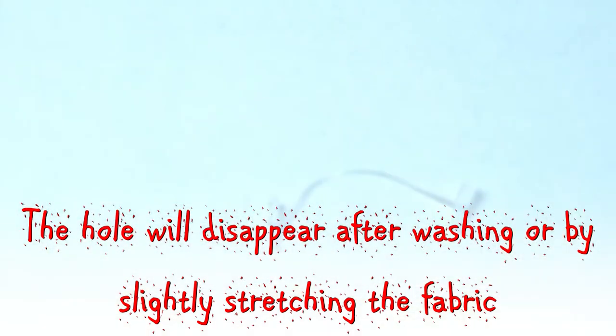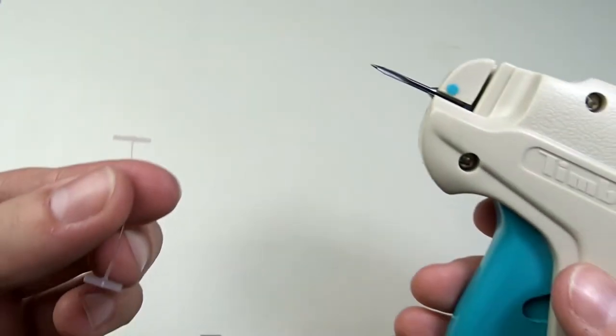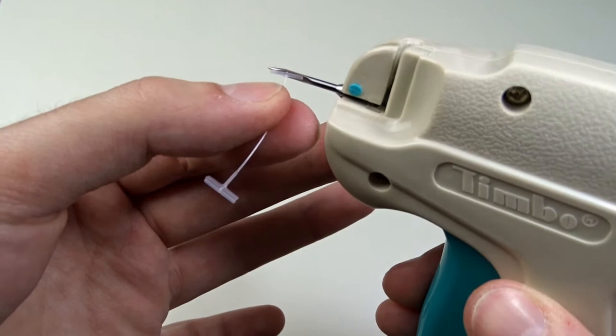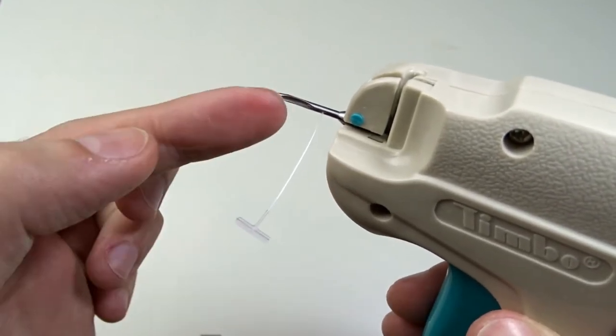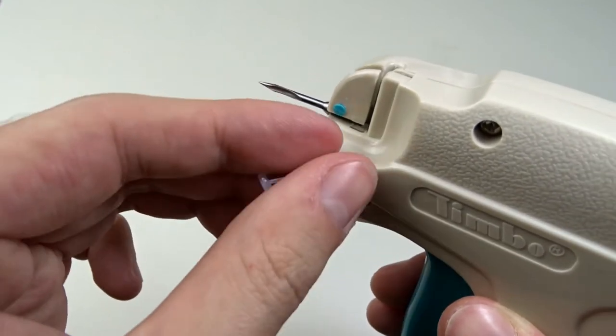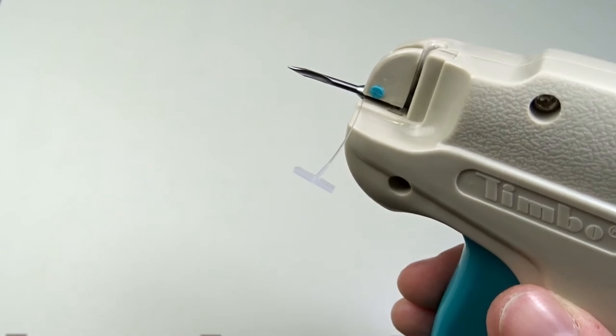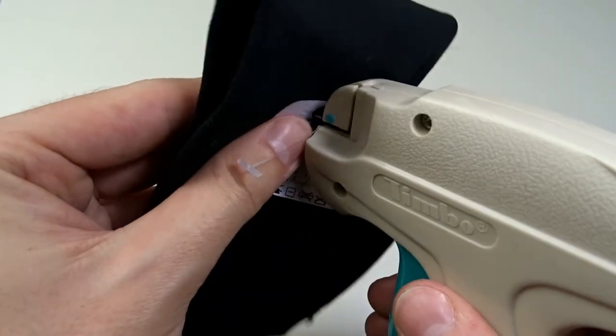Then you can reuse it. If you want to reuse a fastener, remove the fastener clip and insert it into the slot of the needle backward. Then insert the needle through the tag and the fabric and pull the trigger.